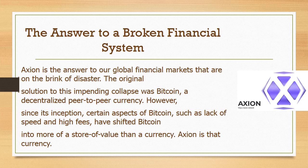The original solution to this impending collapse was Bitcoin, a decentralized peer-to-peer currency. However, since its inception, certain aspects of Bitcoin, such as lack of speed and high fees, have shifted Bitcoin into more of a store of value than a currency. Axion is the currency to address that.